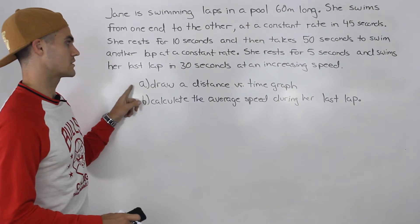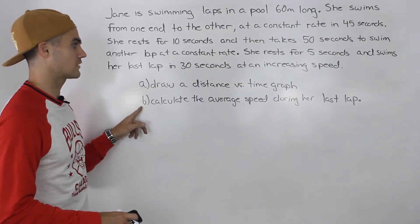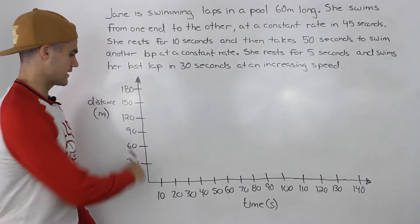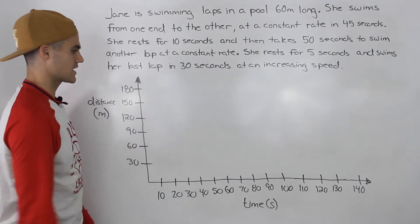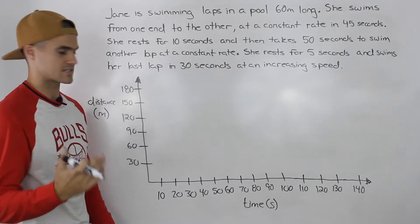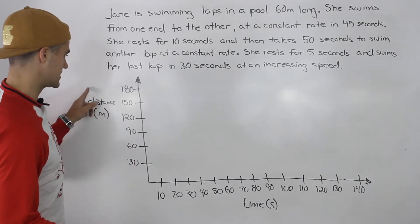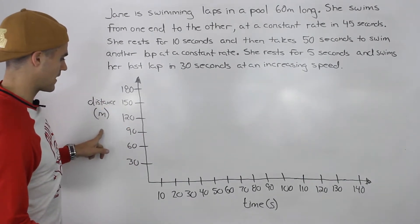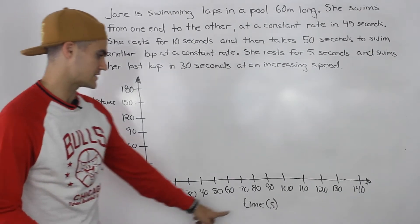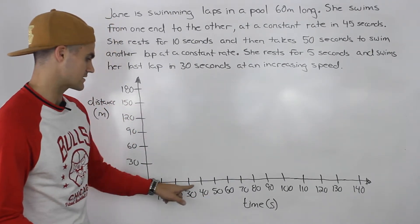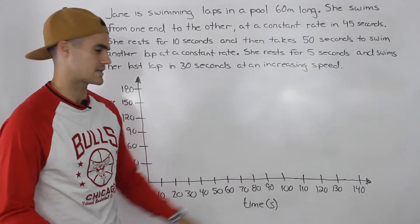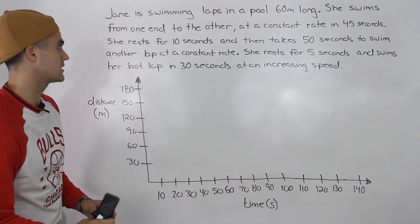Part A: draw a distance versus time graph. Part B: calculate the average speed during her last lap. So for Part A, drawing a distance versus time graph, I drew out the preliminary axis just to save time. The distance on the y-axis goes up by 30 meters, and the time in seconds on the x-axis goes up by 10 seconds.